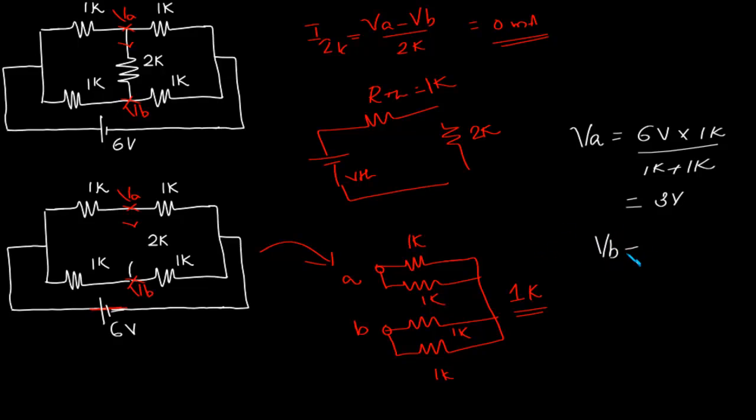Now we have V-B, which is 6-volt into 1k. That is this 1k, divided by 1k plus 1k. So as expected, we will end up with 3 volts. Now what is V-Th voltage, or V-A minus V-B, that is voltage across this terminal. That is, V-A minus V-B is 0 volts.